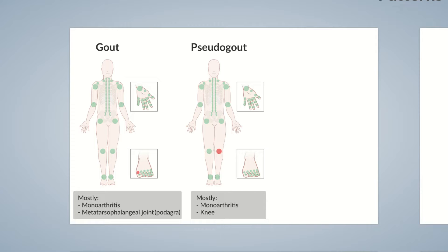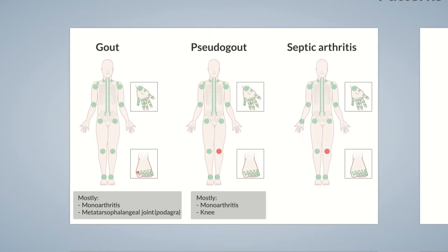The next condition is septic arthritis. Joint involvement is usually monoarticular, with bacteria infiltrating the joint. This can develop, for example, as a result of an intraarticular injection or through a contaminated prosthetic implant. Septic arthritis is usually monoarticular and occurs in large joints. So if you come across cases of acute monoarthritis, these three diagnoses should be on the top of the list: gout, pseudogout, and septic arthritis.